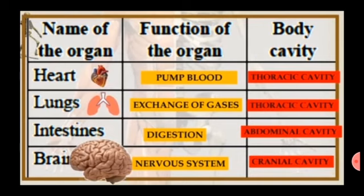Brain. The brain controls one's thought, memory and speech, movement of the arms and legs, and the function of many organs within our body. The brain also gives awareness of abilities and limitations and mental flexibility. It is situated in the cranial cavity, which is the space formed inside the skull.